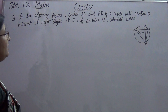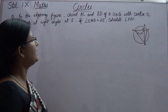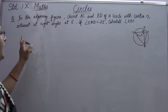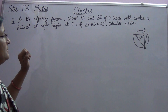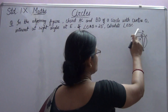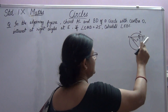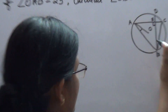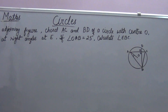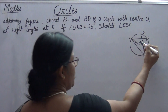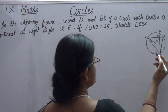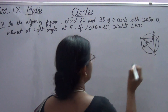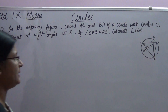In the adjoining figure, chords AC and BD of a circle with center O intersect at right angles at E. This is chord AC and this is chord BD — they are intersecting each other at right angles at E. If angle OAB is 25 degrees, let us mark it 25 degrees.